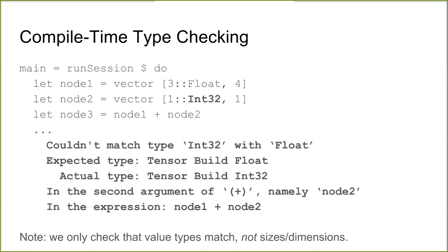I should point out that we only do type checking for the element types of the tensors, not the dimensions. If one vector is size 5 and one is size 7, or one is one-dimensional and one is two-dimensional, we're not going to catch that. We don't get enough information from TensorFlow either at compile time or really at runtime to be certain of that. It's also an open question of how you'd model dimensional types in Haskell in the first place.